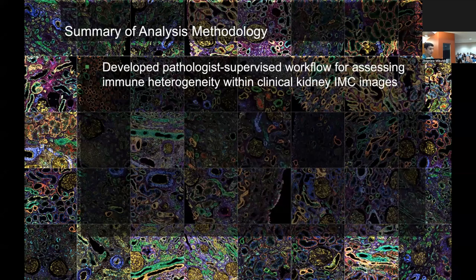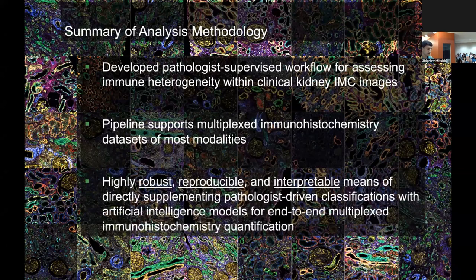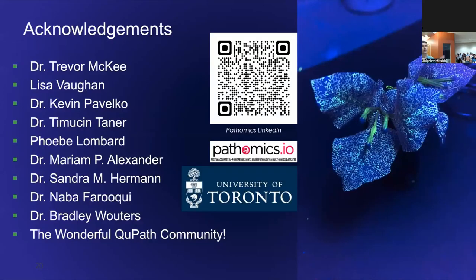In short, we've developed a pathologist-supervised workflow for assessing immune heterogeneity within clinical kidney IMC images. We have a pipeline that supports multiplex immunohistochemistry datasets of most modalities. And we've developed a highly robust, reproducible, and — thanks to QuPath — interpretable means of directly supplementing pathologist-driven classifications with artificial intelligence models for end-to-end multiplex IHC quantification. There are many people to thank: bioinformaticians, supervisors, clinicians — but the true unsung heroes are the wonderful QuPath community.